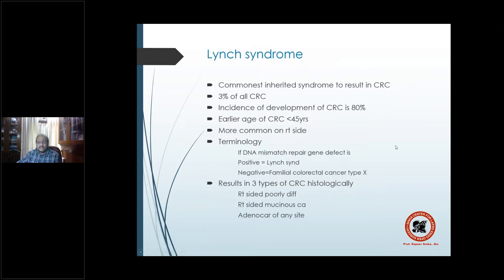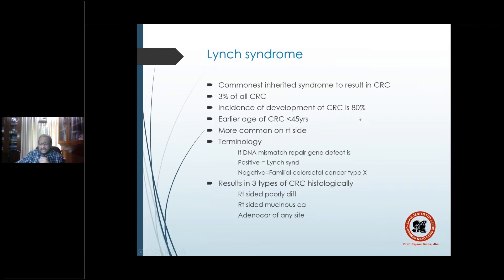If DNA mismatch repair gene defect is positive, it is familial Lynch syndrome. If negative, it is called familial colorectal cancer type X. Lynch syndrome results in three types of CRC: right-sided poorly differentiated carcinoma, right-sided mucinous carcinoma, and adenocarcinoma of any side. Diagnosis requires genetic testing for MLH and MSH genes and fulfillment of the Amsterdam criteria: three or more family members with HNPCC-related cancer (one a first-degree relative of the other two), two successive affected generations, at least one diagnosis before age 50, FAP excluded, and pathology confirmed.